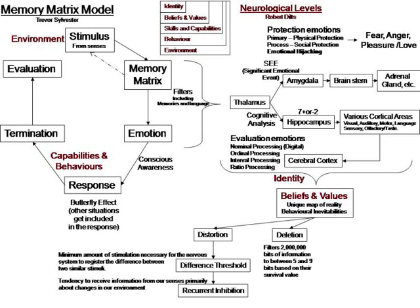We have to filter down about two million bits of information into between five and nine bits based on their survival value. A guy called George Miller, born in 1920, wrote a book in the late 50s called The Magic Number Seven Plus or Minus Two. We can only have between five and nine things in our short-term memory — five to nine chunks of information — so we have to ignore a lot of stimulation to concentrate on the five to nine things most important to our survival.